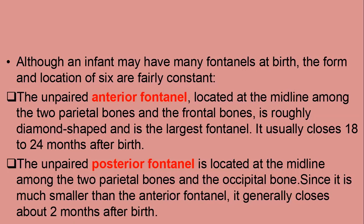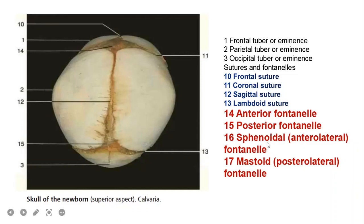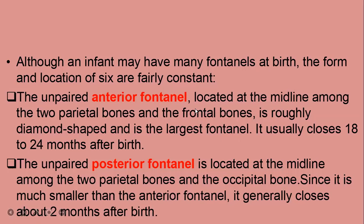Although an infant may have many fontanelles at birth, the form and location of six are fairly constant. These include the anterior fontanelle, the posterior fontanelle, the sphenoidal found on the anterolateral aspect, and the mastoidal mainly seen on the posterolateral aspect of the fetal skull. The unpaired anterior fontanelle is one of these six fairly constant fontanelles.